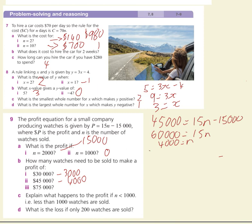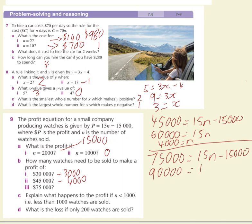For a profit of $75,000: 75,000 equals 15n take 15,000. Add 15,000 to both sides to get 90,000 equals 15n, then divide both by 15 to get n equals 6,000.